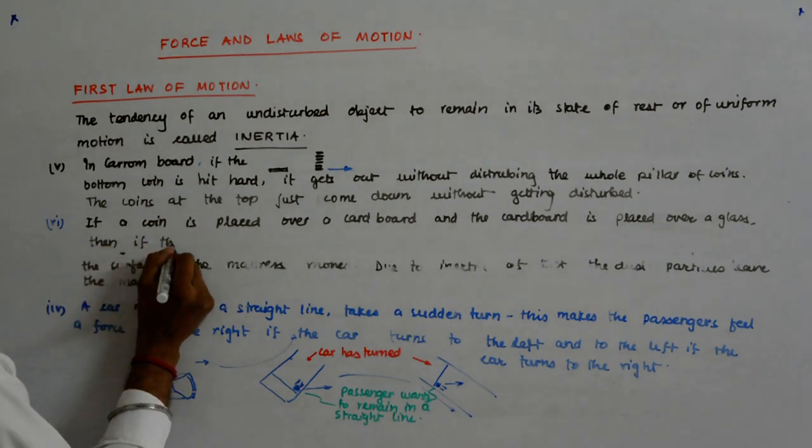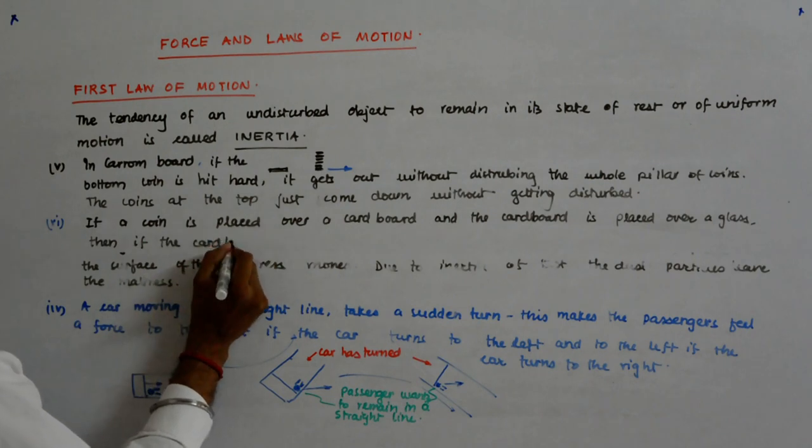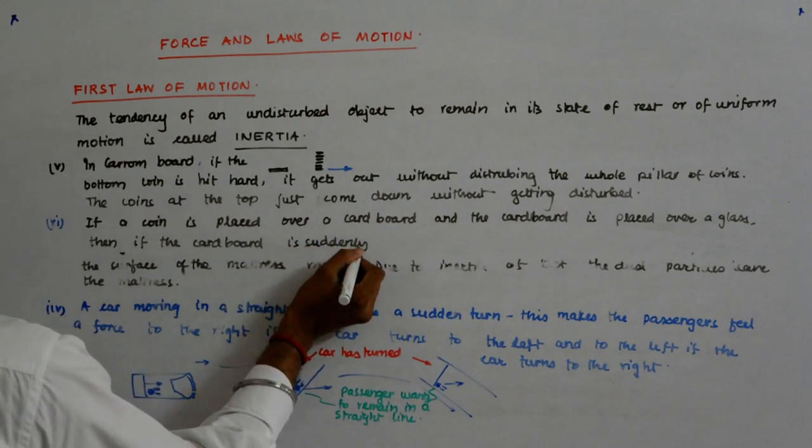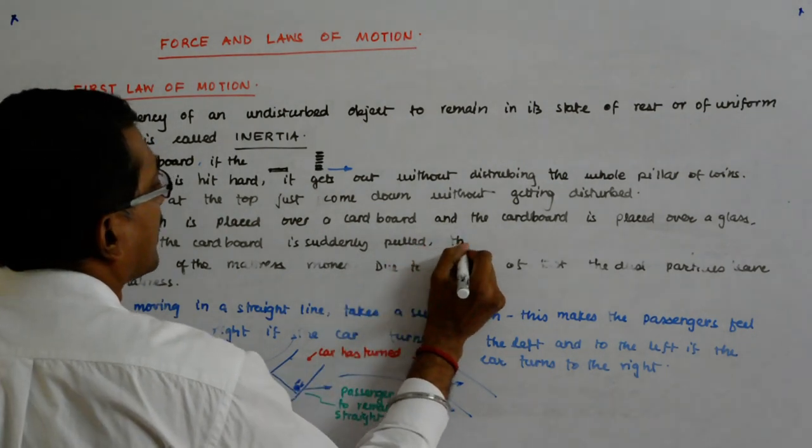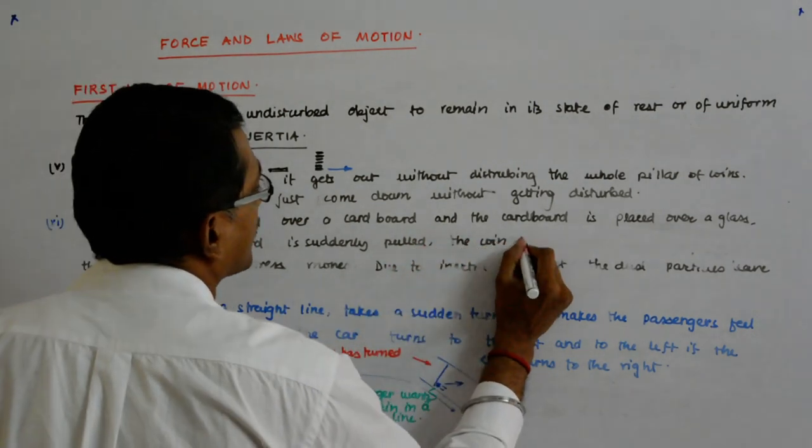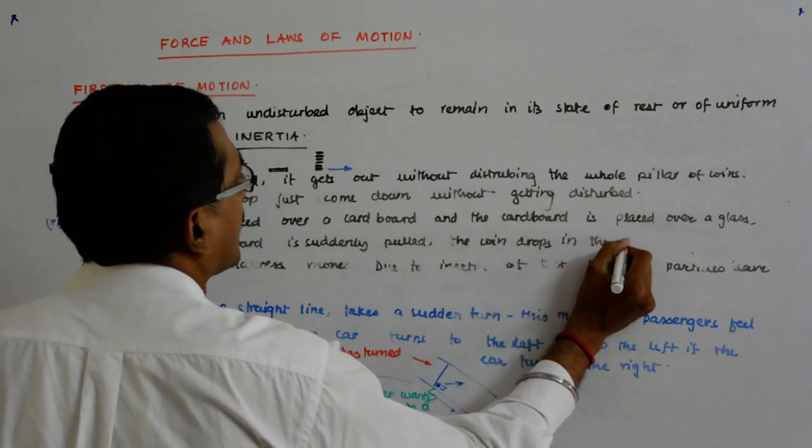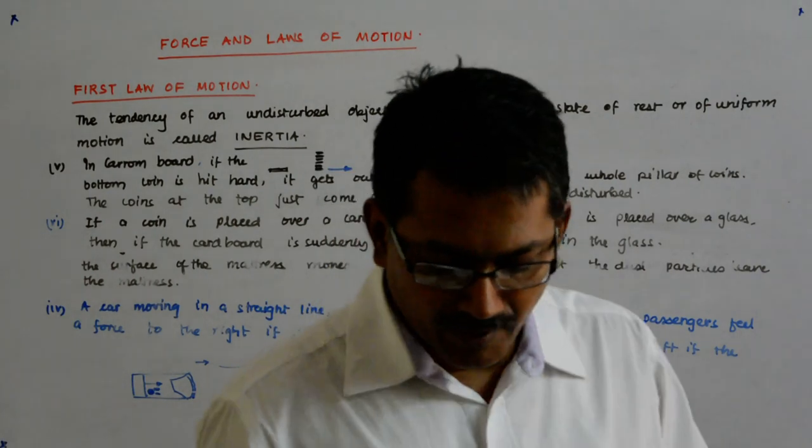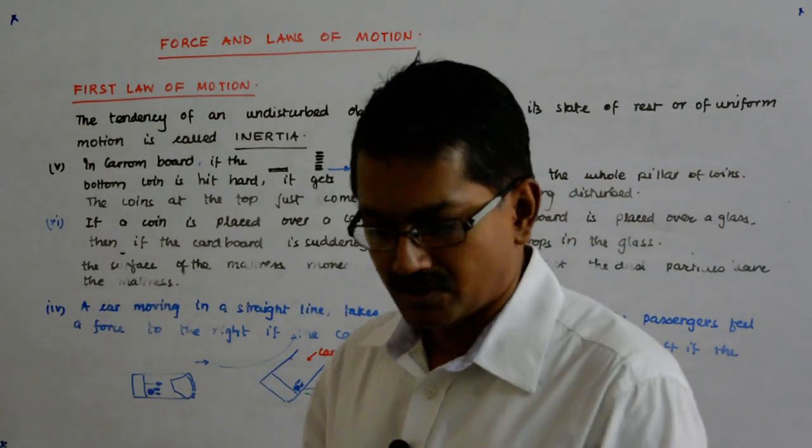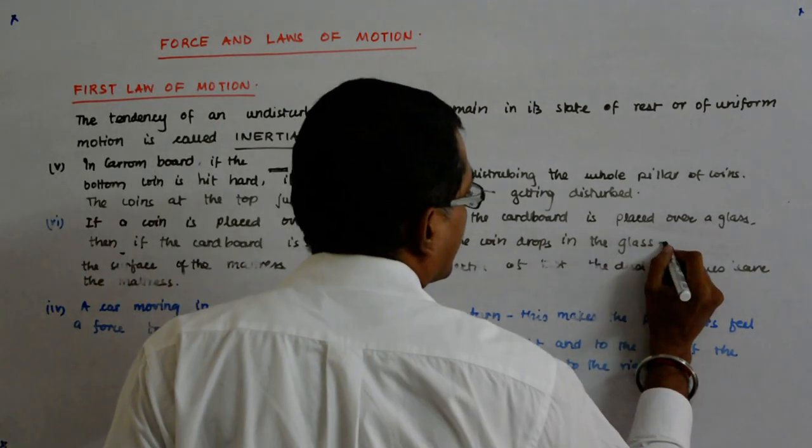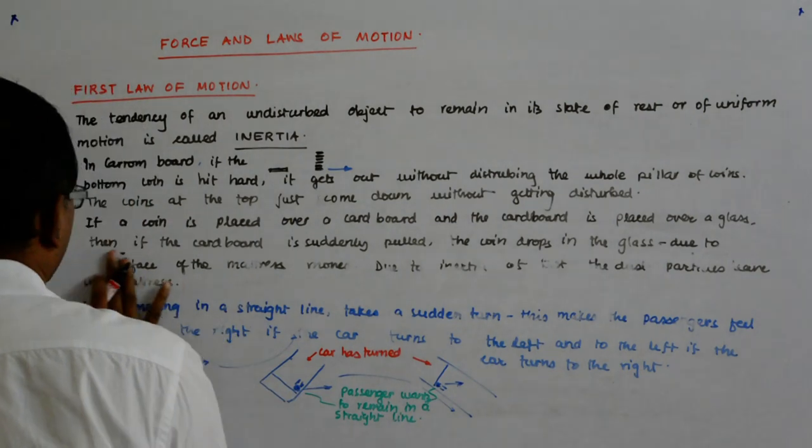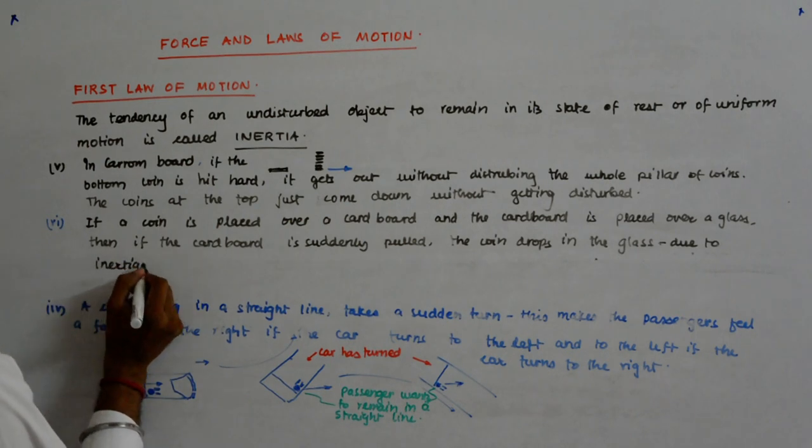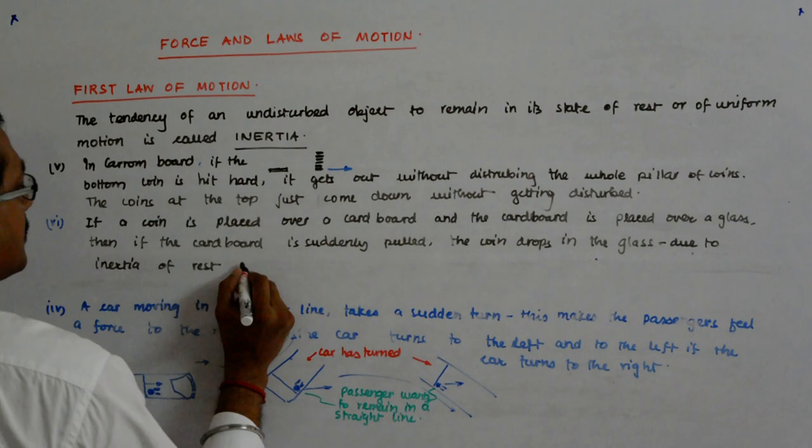If the cardboard is suddenly pulled, the coin drops in the glass. This is also due to the inertia of rest of the coin.